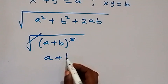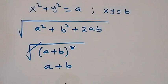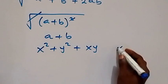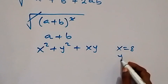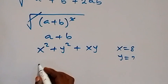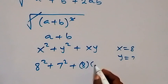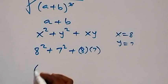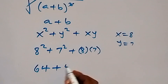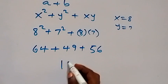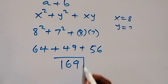This gives us a plus b, which is x² plus y² plus xy. Recalling x equals 8 and y equals 7, we substitute: 8² plus 7² plus 8 times 7, which is 64 plus 49 plus 56. Adding these together gives 169. That is the solution to this problem.